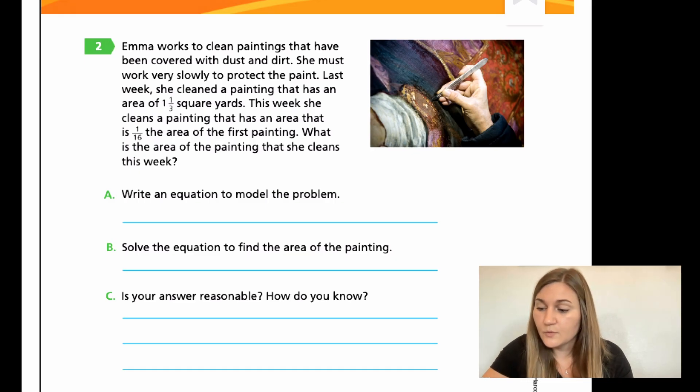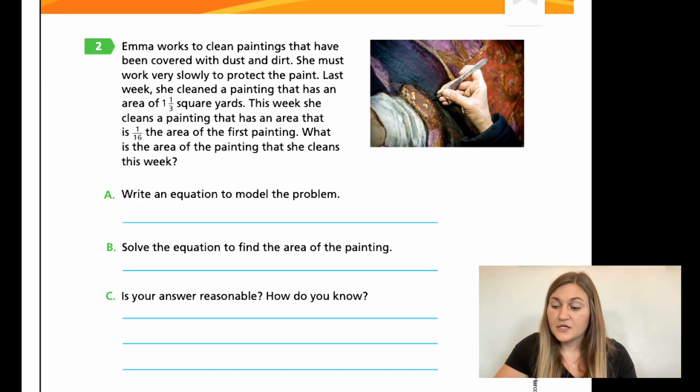So for number two, it says, Emma works to clean paintings that have been covered with dust and dirt. She must work very slowly to protect the paint. Last week, she cleaned a painting that has an area of 1 1/3 square yards. This week, she cleans a painting that has an area that is 1 1/6 the area of her first painting. What is the area of the painting that she cleans this week? So for A, write an equation to model the problem. So you're just writing the equation, not solving it. You're solving it in B. Solve the equation to find the area of the painting, and then C, is your answer reasonable? This should be pretty quick. Go ahead and do these three problems. And hit pause here.